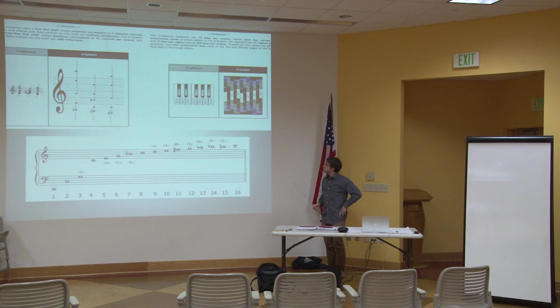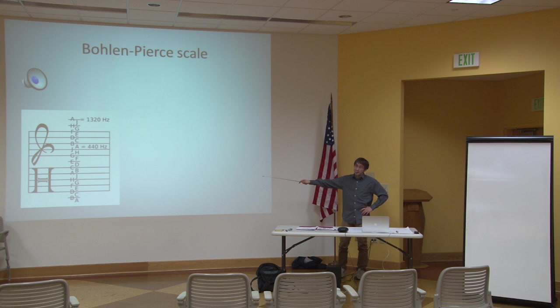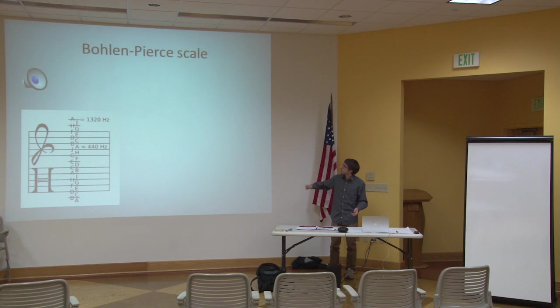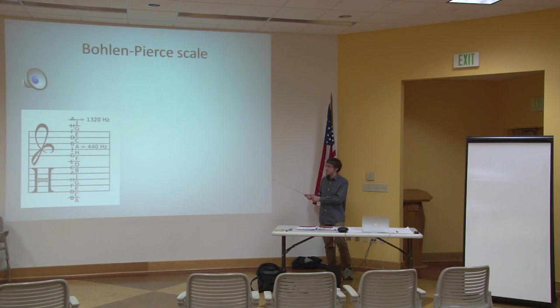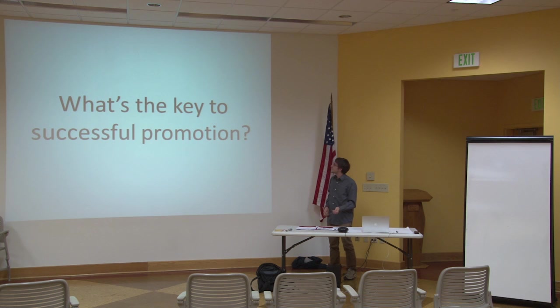The Bohlen-Pierce scale is really weird, and it doesn't divide the octave. This is why some people, when they use the word equal temperament, actually mean stuff like this. Bohlen and Pierce independently discovered a scale that divides the tritave into 13. Just know that it is a recent experiment undertaken by these ideas.